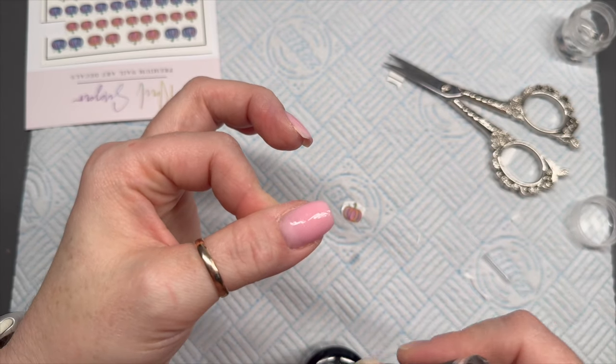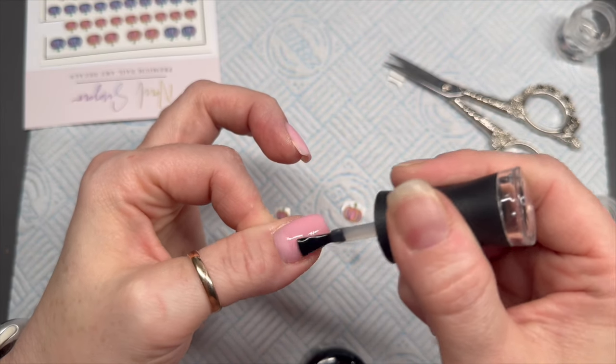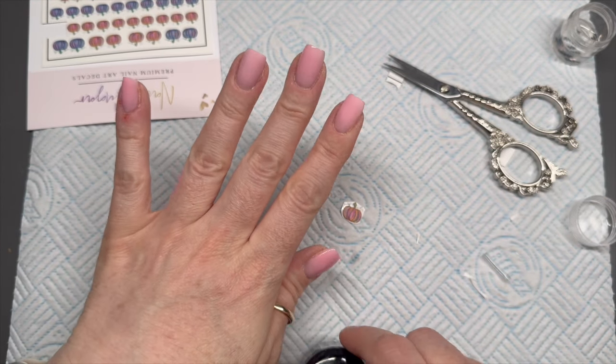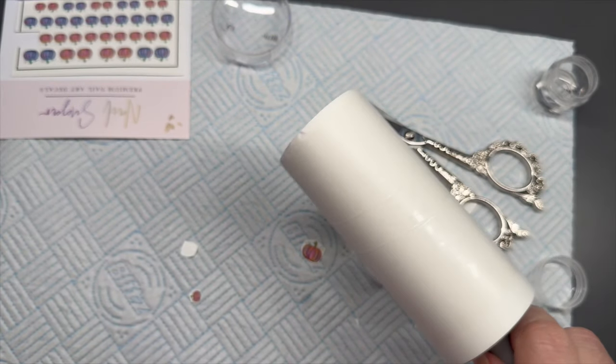We need something for them to stick onto. I'm just taking some base coat and I'm going to put a very thin layer onto the nails where I'm going to put the pumpkins. I'm going to put the pumpkins nearer the free edge, more at the bottom of the nail. I'm making this nice and thin. Once we've got our base coat on, that's going to need a cure. Pop that in the lamp. I think this base coat is 30 seconds, but the newer bottles say 60. If you're unsure, cure it for a bit longer.